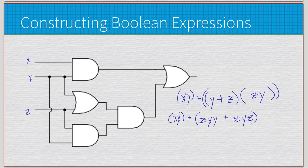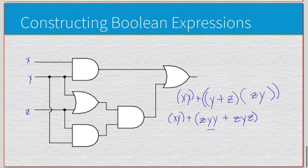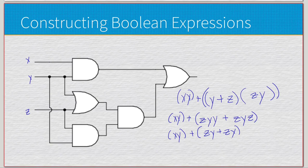We can now apply the idempotent law twice. We have z times y times y — y times y equals y by idempotent law. And z times y times z — z times z equals z by idempotent law. So we end up with zy plus zy, which is yet another case of the idempotent law, giving us just zy.